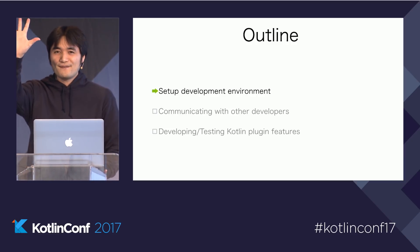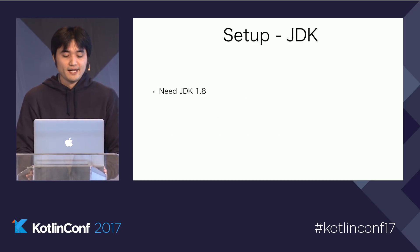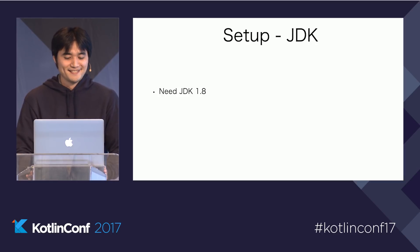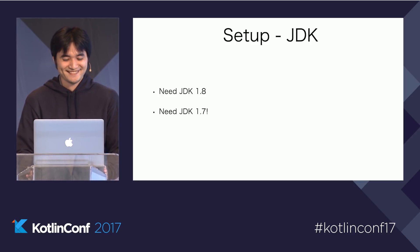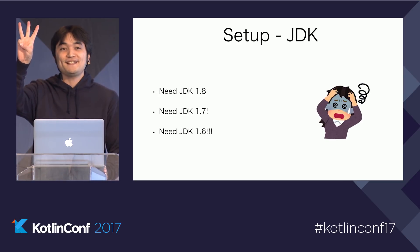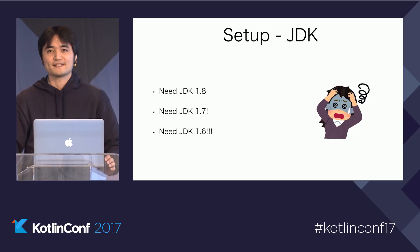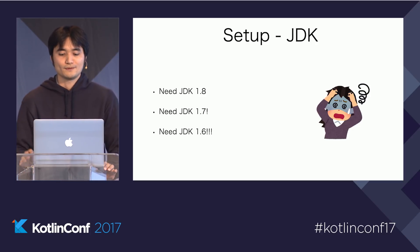There are five parts of setup. The first setup is JDK. Kotlin requires JDK 1.8, JDK 1.7, and JDK 1.6. Yes, you need to install three different versions of JDKs. And if you take a look at the code closely, there are option settings for JDK 9. So in the near future, there will be four JDKs.